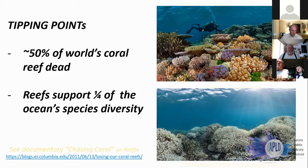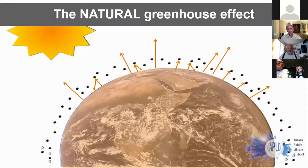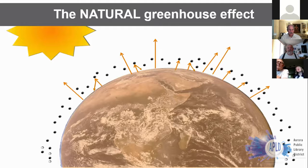Experts say the reefs will be gone within 30 years at the current pace of decline. This is more than preserving my favorite pastime — coral reefs are the ocean's nurseries. One quarter of ocean species depend on the reefs, and over a billion people get some portion of their daily protein from the oceans. If we lose the reefs, we lose the biodiversity, we weaken the ecology, and people will struggle for sustenance.